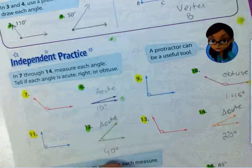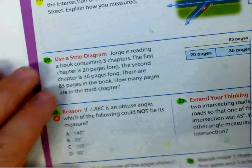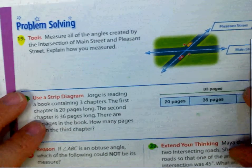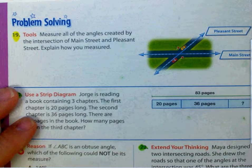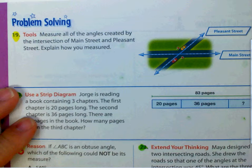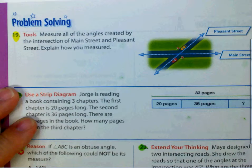Let's look at the back side. On question number 19, it says: measure all the angles created by the intersection of Main Street and Pleasant Street, and explain how you measured.